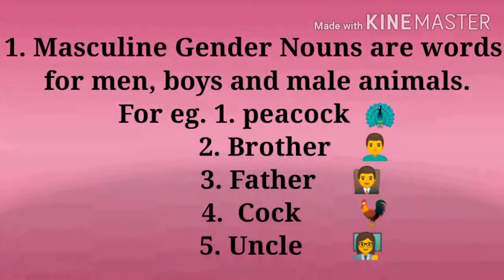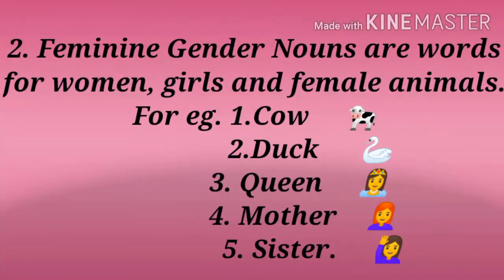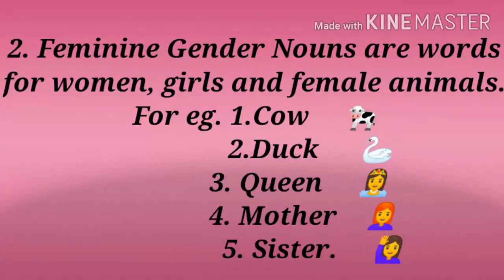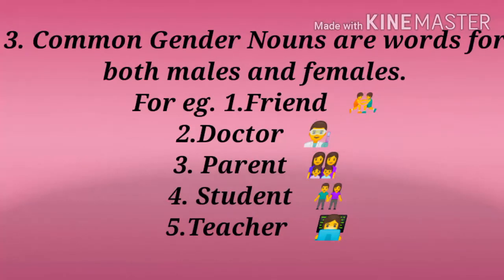Number two: feminine gender. Feminine gender nouns are words for women, girls, and female animals — for example, cow, duck, queen, mother, and sister. These are all feminine gender.